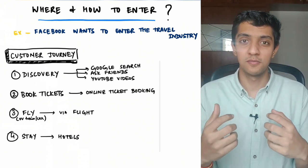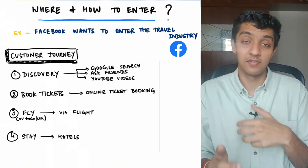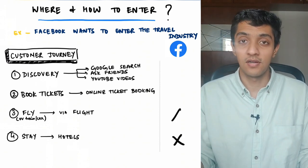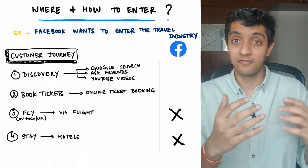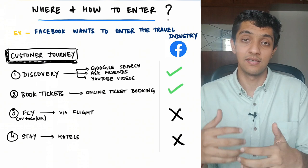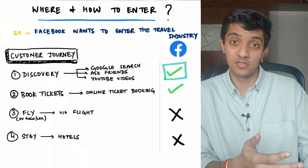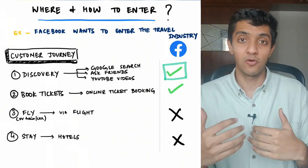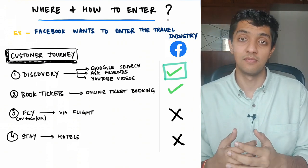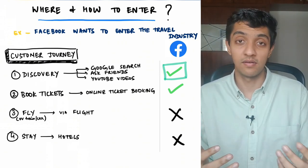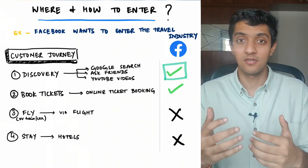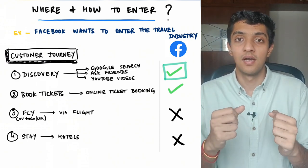In these four phases, where does Facebook's biggest strength lie? It's most definitely not in owning hotels or running an airline service. If anything, it's in the first phase of discovery and exploration, or maybe the second phase of building a ticket booking platform. You could argue it makes the most sense to be in the first phase, given that Facebook already has a lot of people posting pictures, checking in at different hotels. Facebook knows what time of year they travel, when, where, and so on. They have a ton of details around that and it would probably make the most sense for them to build a feature that helps users discover great places to travel.